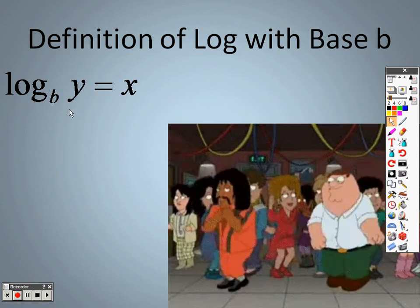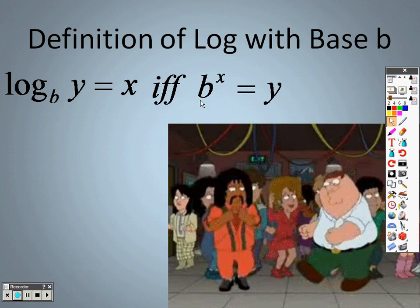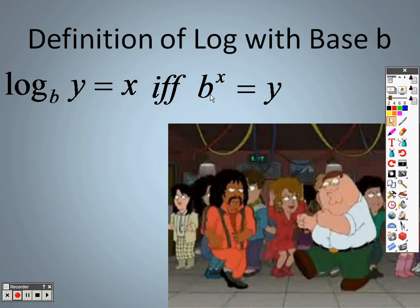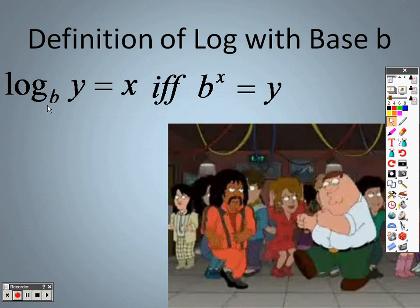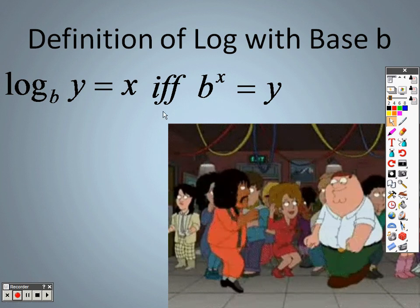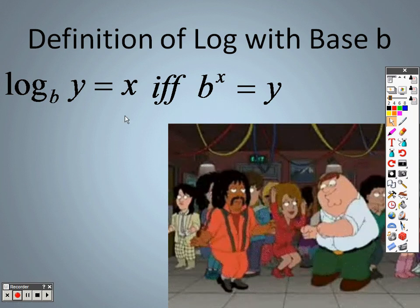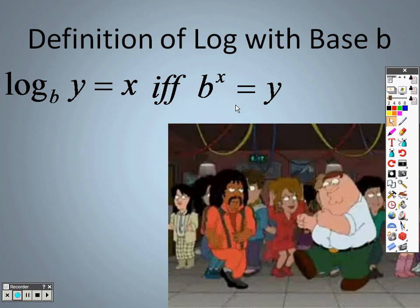A log normally has the form of a log with a little subscript number — we call it a base number b — and a number following it. You're used to seeing exponents with a base number b to the x power. What I want you to keep in mind is when you're rewriting these logs, the base in this log — which is the little b — is the same base in the exponential equation. So keep in mind: b is the base of the log and also the base of your exponential equation.